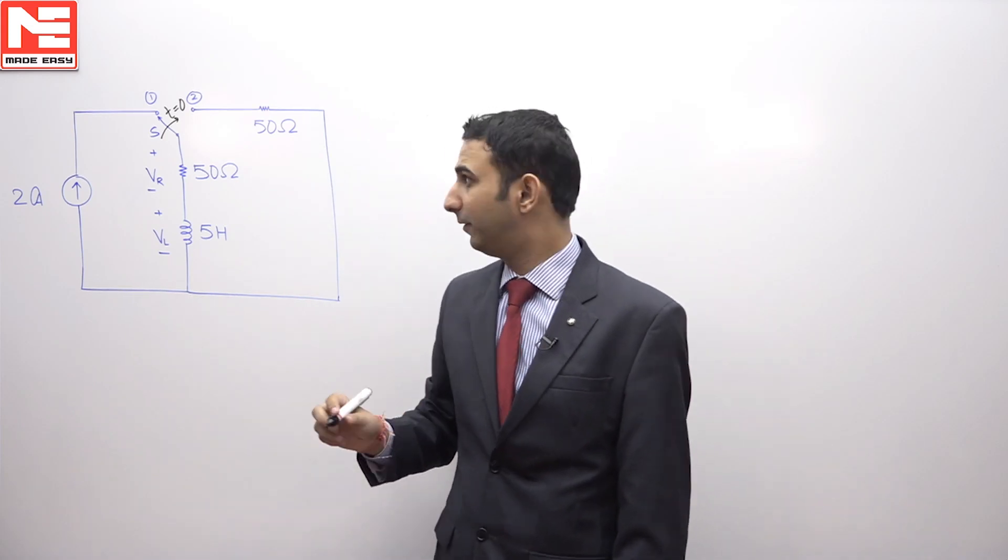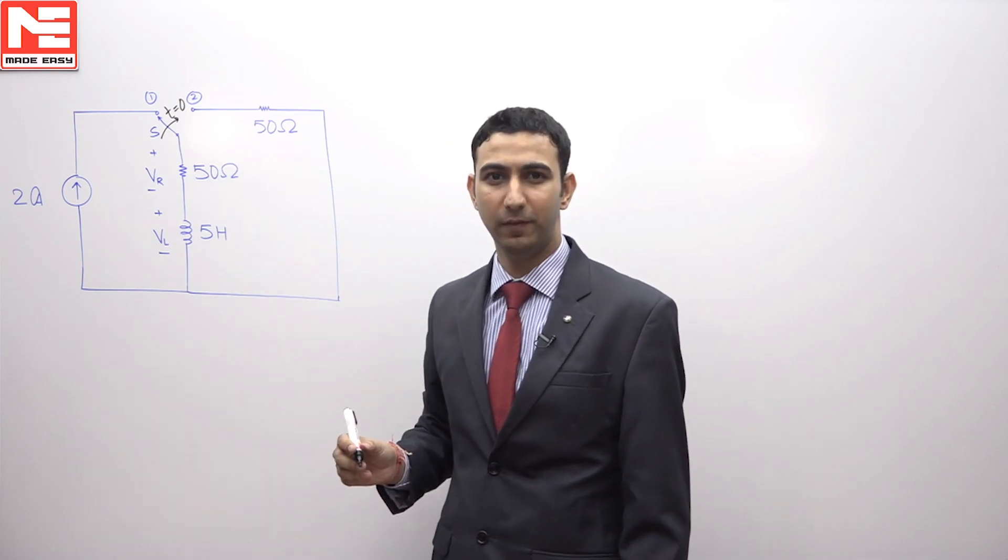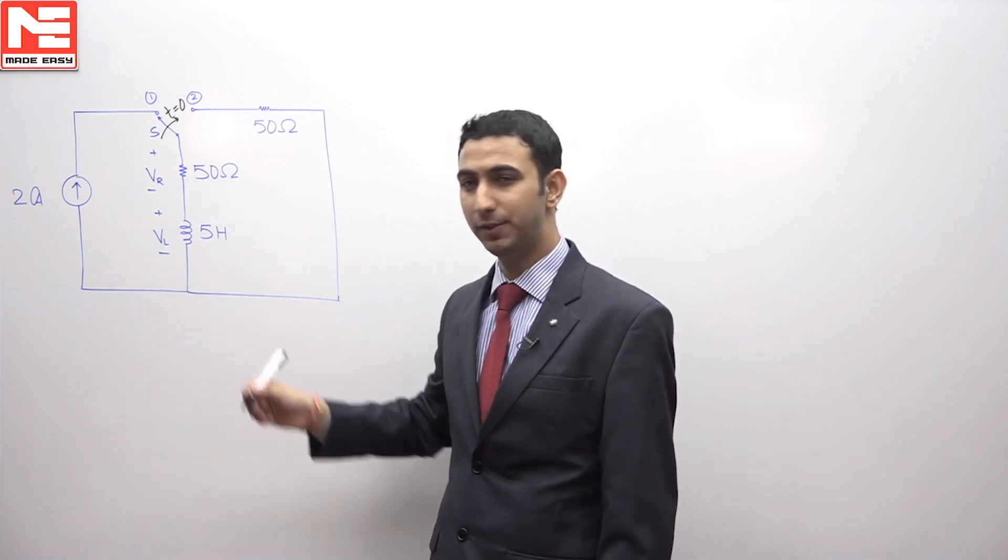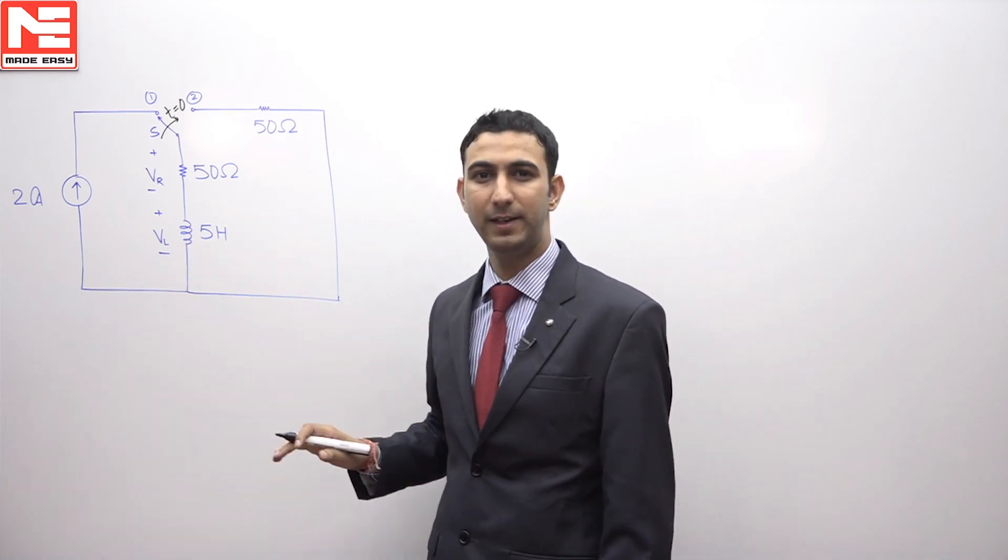We have to find the value of the voltage VL at t equals 0 positive, that is the value of the voltage across the inductor at t equals 0 positive. So first we will have to calculate the current that was flowing through the inductor at t equals 0 negative.